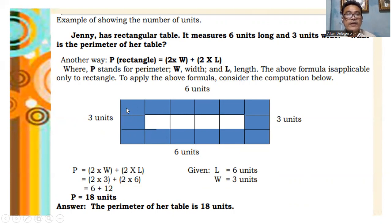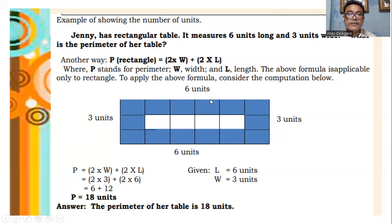For the rectangular table, we have 6 units long and 3 units wide. Using the formula P equals 2 times width plus 2 times length: 2 times 3 (width) equals 6, plus 2 times 6 (length) equals 12. So 6 plus 12 equals 18 units. The perimeter of our table is 18 units.